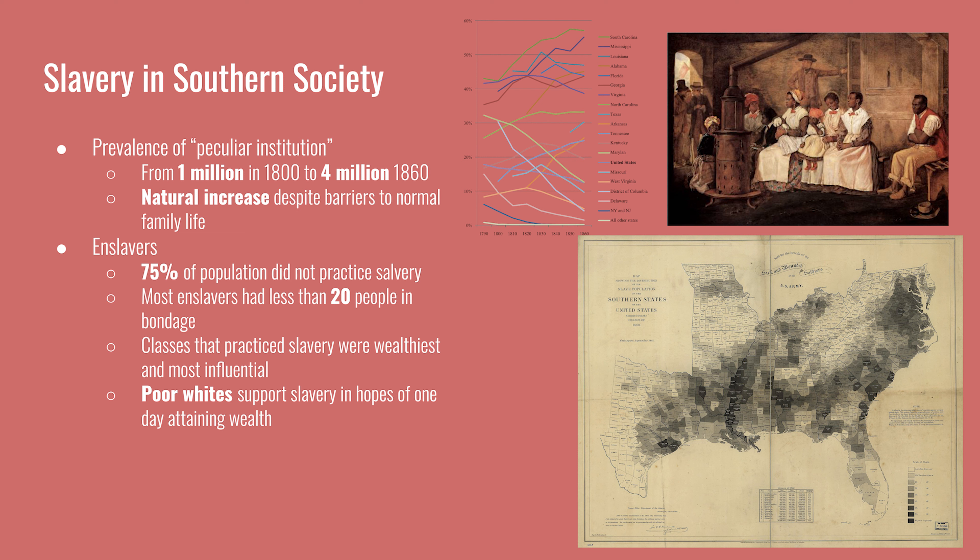As for the enslavers, 75% of the population did not practice slavery in the South. A lot of these plantations and agricultural enterprises in the South were worked on by white families who did not have enslaved people on their plantation. Most plantations that practiced slavery had less than 20 people in bondage, and a very small, very wealthy aristocratic class owned the majority of the slaves in the South.